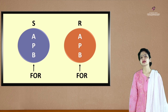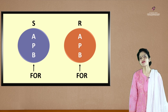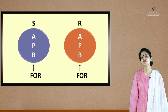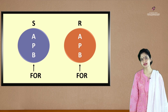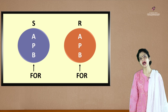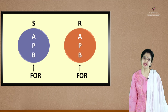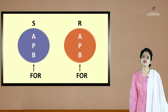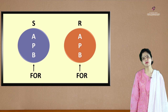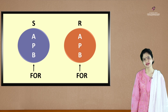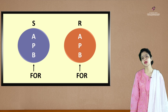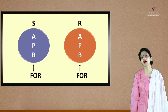Similarly, APB stands for attitude, perception and belief for the receiver. FOR stands for frame of reference for each one of them. This frame of reference is comprised of different attitudes, perception and belief which the sender and the receiver have imbibed in their respective period of life. Whatever message they make or code is comprised of these three things, along with many other qualities which we as human beings imbibe in our life.